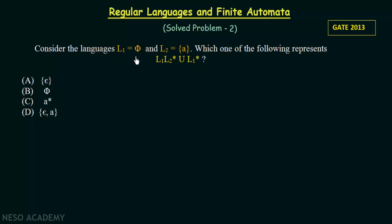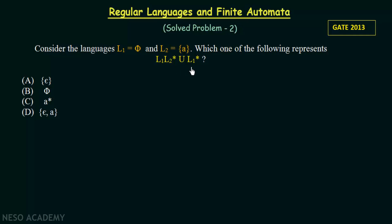Consider the language L1 equal to Phi and L2 equal to A. Which one of the following represents L1 into L2 star union L1 star? Option A is Epsilon, option B is Phi, option C is A star, and option D is a set containing Epsilon and A. We are given L1 equal to Phi and L2 equal to A, and we need to evaluate the expression L1 into L2 star union L1 star.